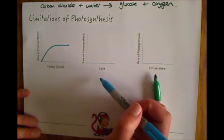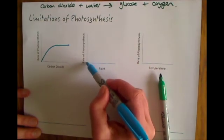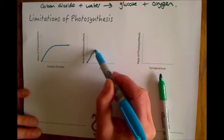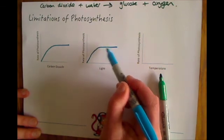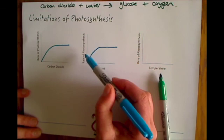With light you have a very similar pattern. As you increase the light levels or the light intensity photosynthesis increases, but up until a point and then if you increase the light levels further the rate of photosynthesis will not increase anymore.